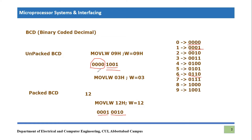In unpacked BCD, only the lower portion is used and the higher portion is unused. Packed BCD is more efficient in terms of storage because it uses eight bits to store two BCD numbers, while unpacked BCD stores only one BCD number in eight bits. This is why packed BCD is more commonly used.